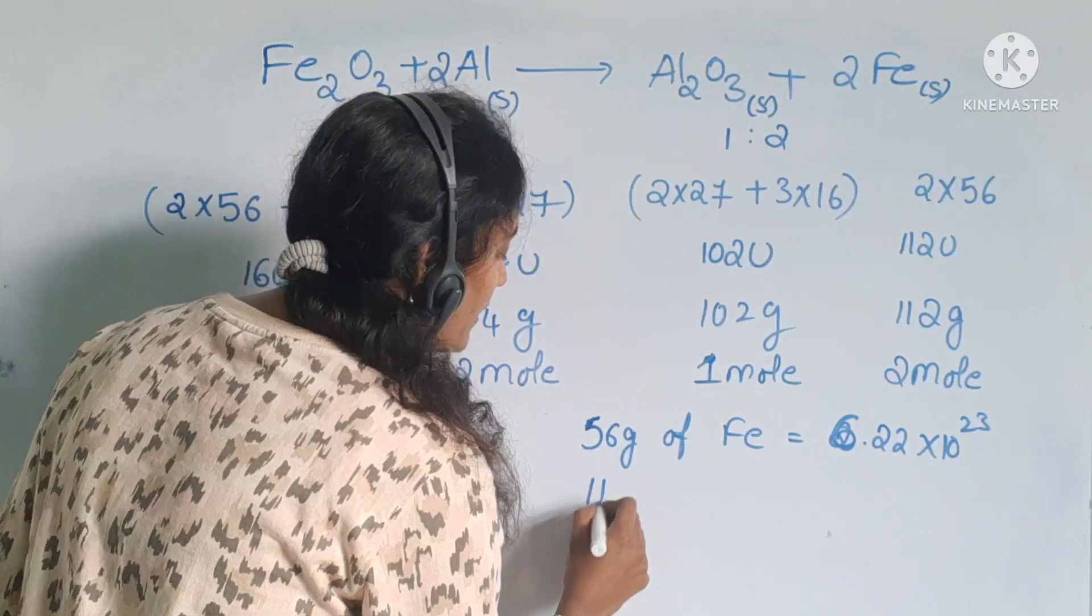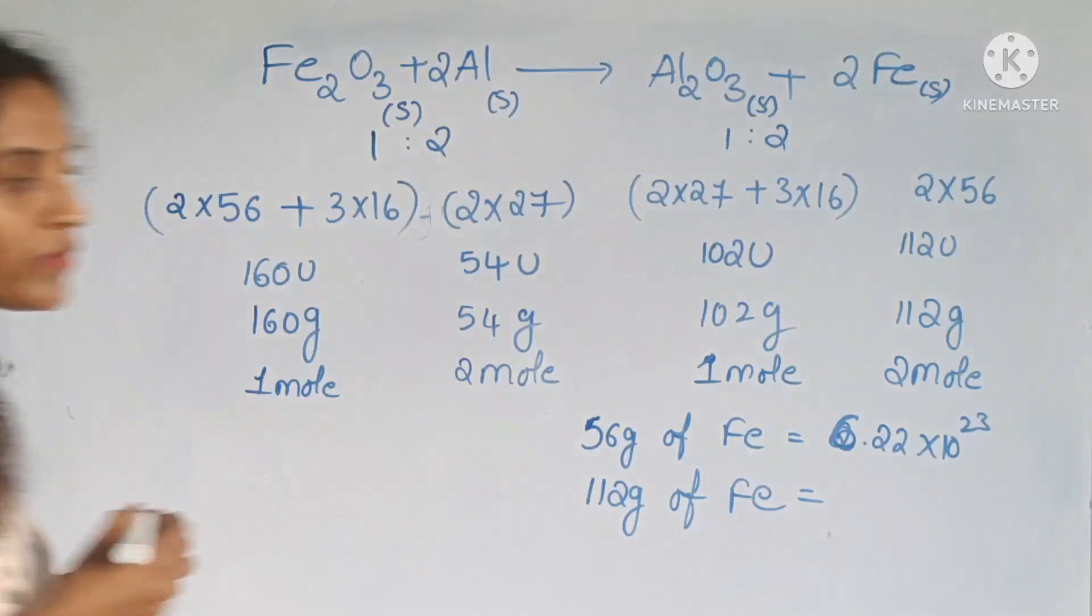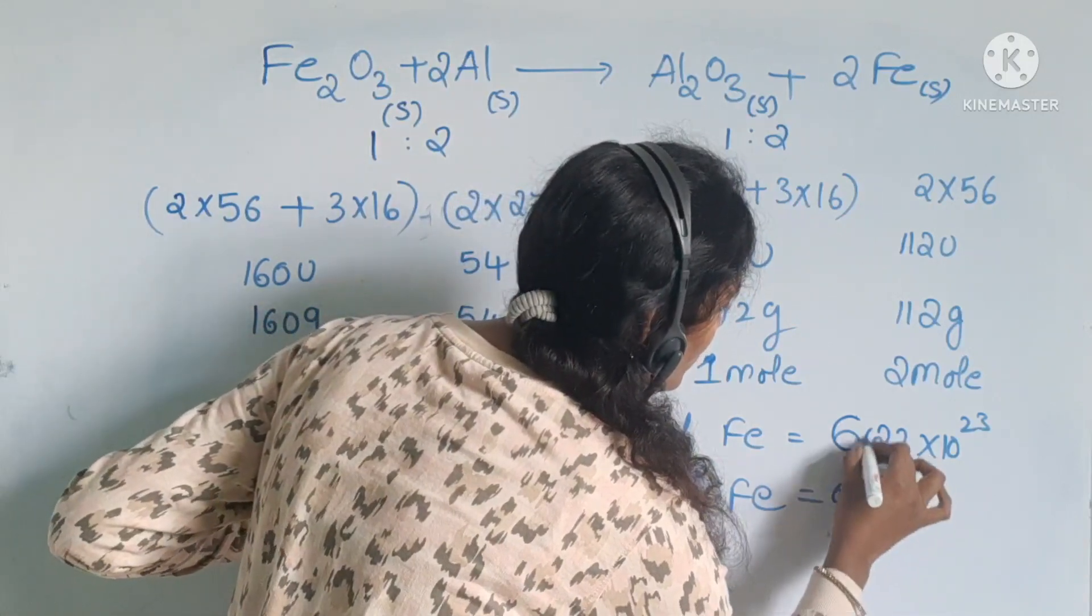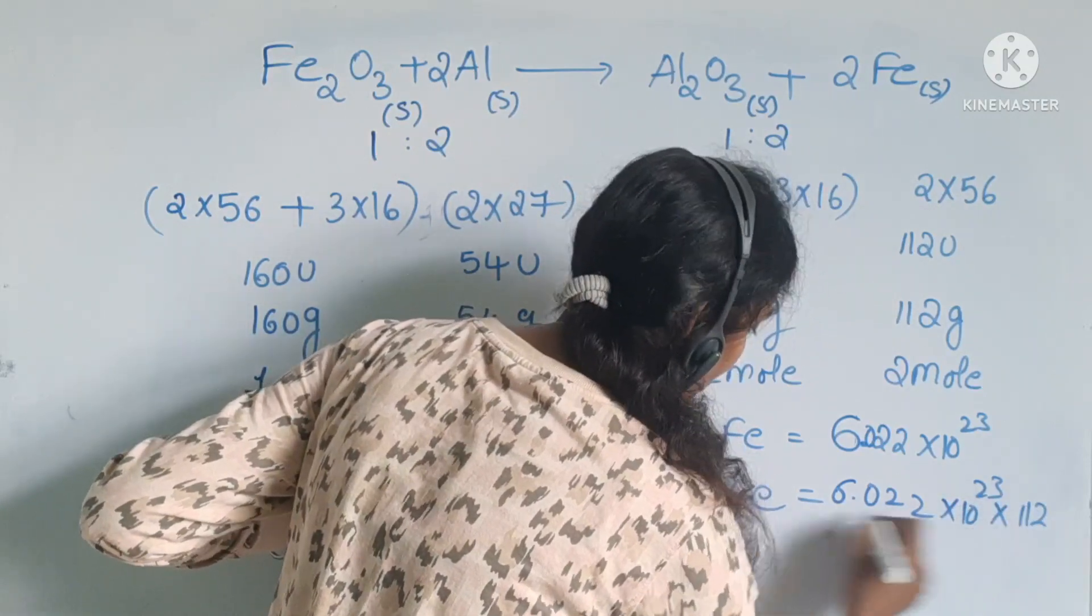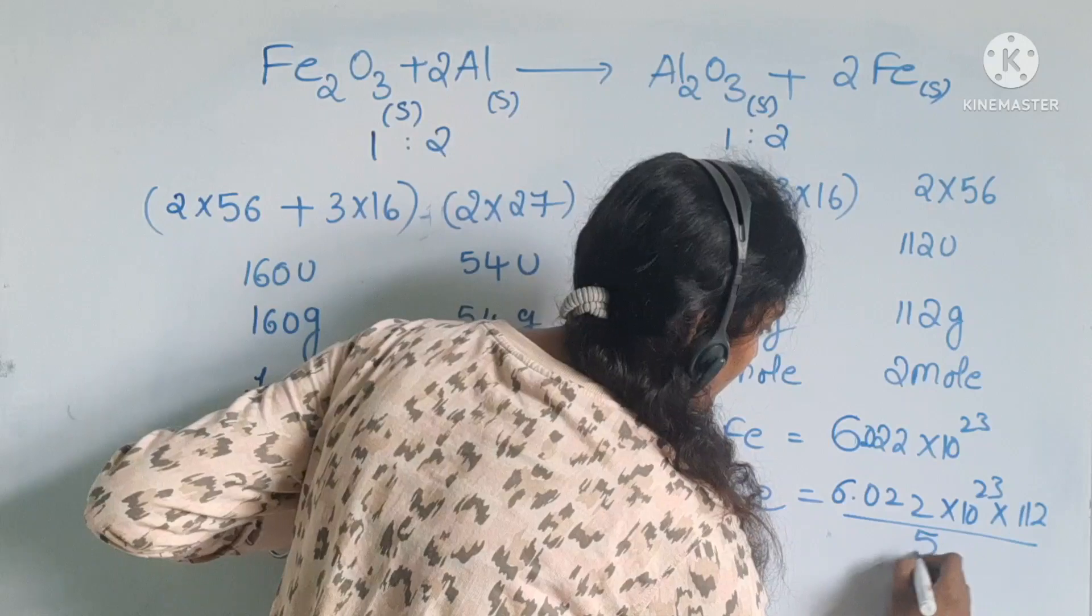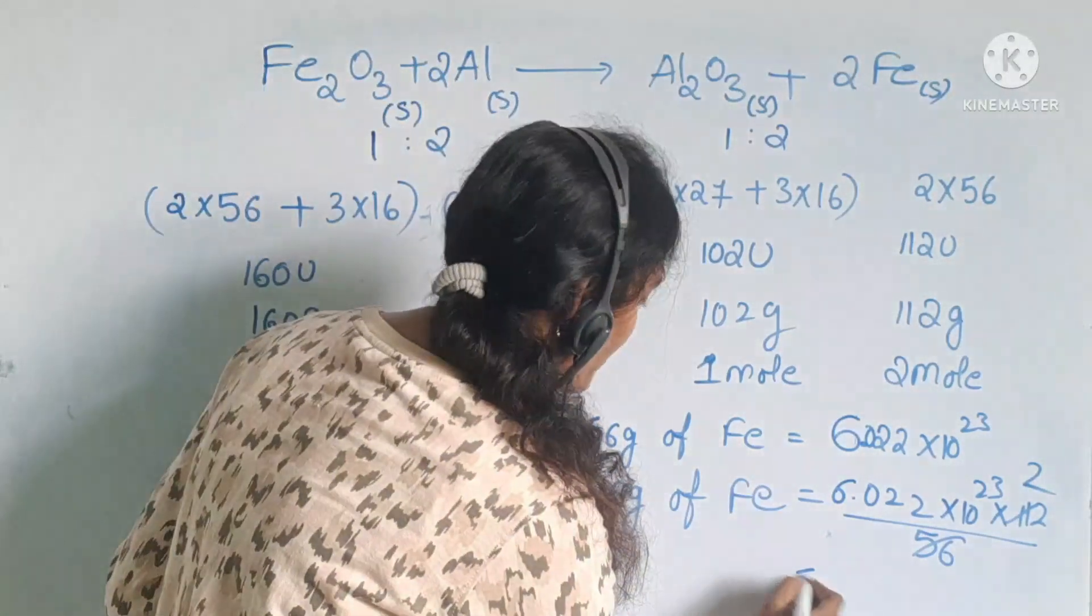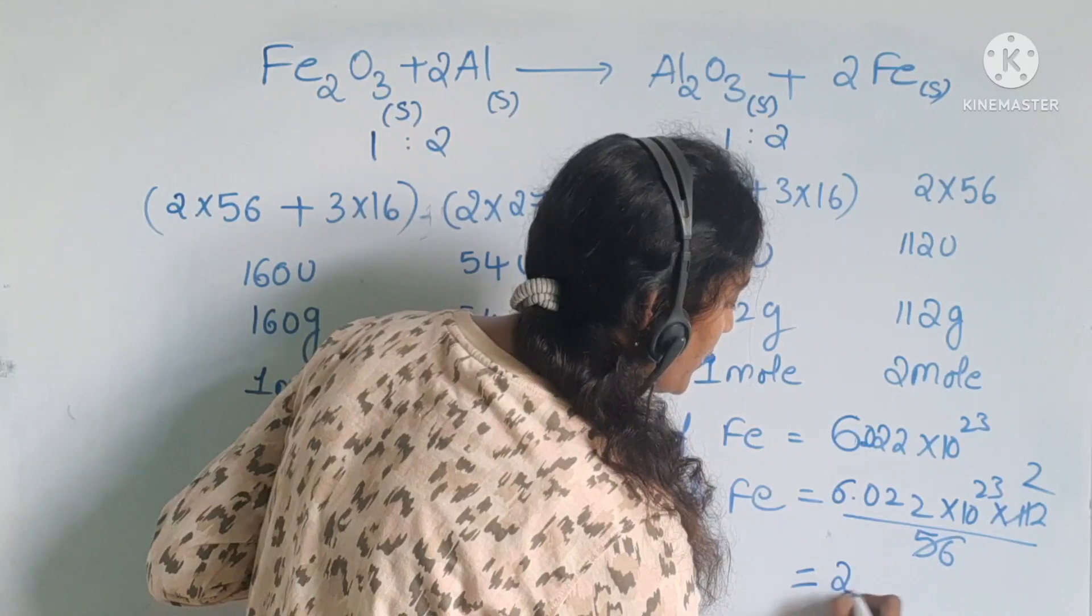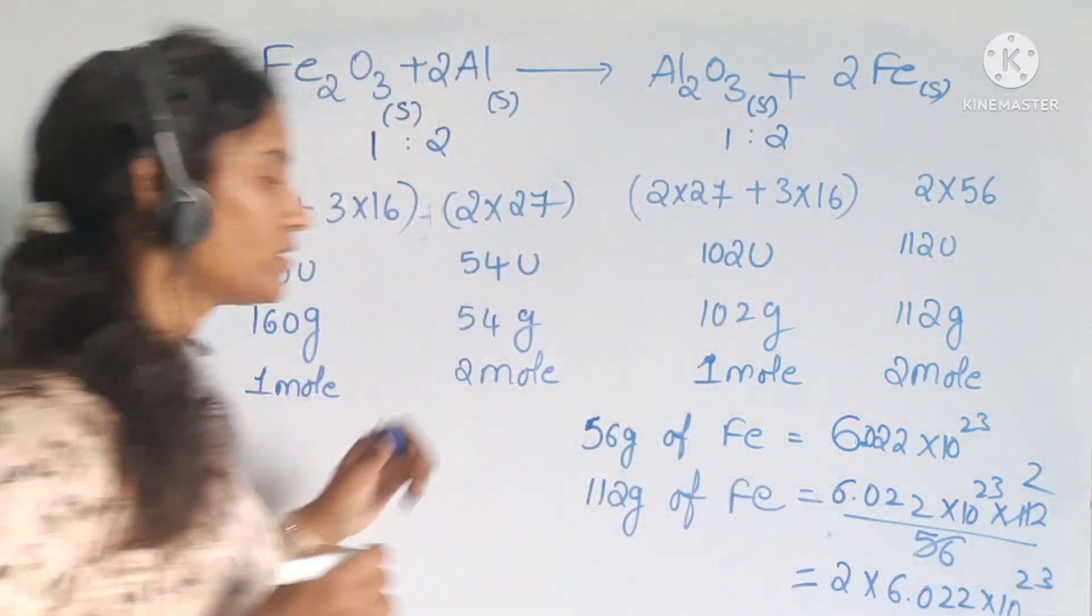Then 112 grams of Fe2O3 equals how many number of particles, you should calculate. You can cross multiply: 6.022 into 10 power 23 into 112 divided by 56. You can simplify it. So number of particles present in 112 grams of iron equal to 2 into 6.022 into 10 power 23 particles students.